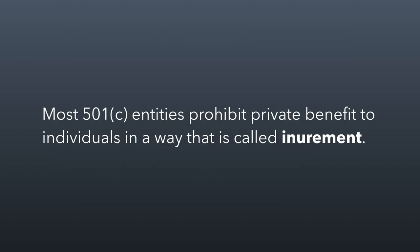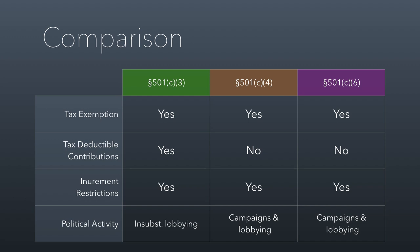When we talk about all of these entities, it's worth mentioning that most 501c entities prohibit private benefit to individuals in a non-charitable way — that's called inurement. We're going to talk about this concept in session 2.3, but the key idea is that organizations can't use the charity's assets to benefit private individuals in a non-charitable way. Here's a handy comparison chart: all three — C3, C4, C6 — are tax exempt, meaning they don't pay tax on their profits. Only C3s can receive tax-deductible donations. All of them face inurement restrictions. But as far as political activity goes, C4s and C6s have a lot of room to work, while C3s have very little — only insubstantial lobbying and no political campaigning. I look forward to seeing you all in class.